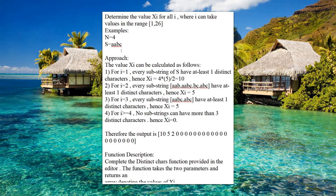We shall consider a sample example: n equals 4 and s is 'aabc'. Our approach is to calculate xi. For i equal to 1, we need to find all substrings of s that have at least one distinct character. The total number of substrings is 4 into 5 divided by 2, giving 10 possible substrings.